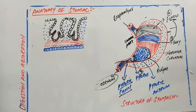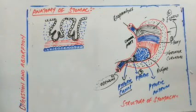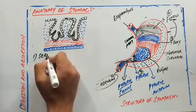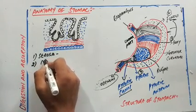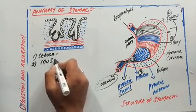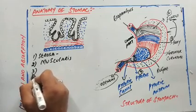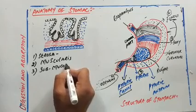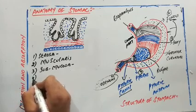Regarding the anatomy of the stomach wall, it consists of four layers. From outer to inner: the first is the serosa, the second is the muscularis, the third is the submucosa, and the fourth is the mucosa layer.